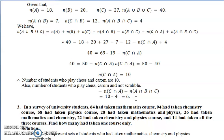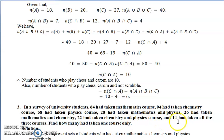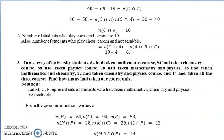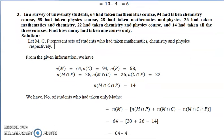Now the third problem. In a survey of university students: 64 had taken mathematics, 94 had taken chemistry, 58 had taken physics. Also, 28 had taken both mathematics and physics, 26 had taken mathematics and chemistry, 22 had taken chemistry and physics, and 14 had taken all three courses. Find how many had taken only one course.